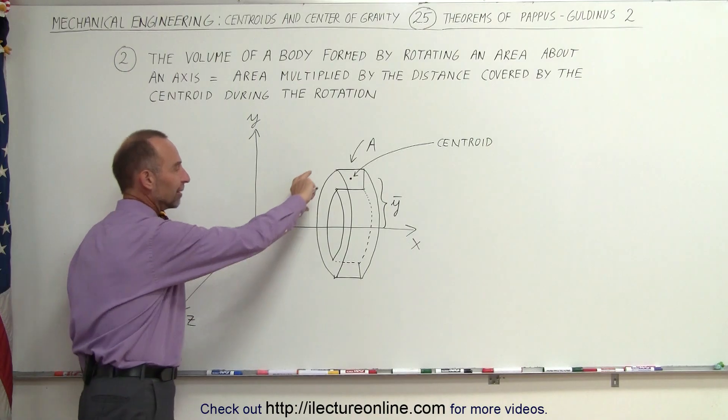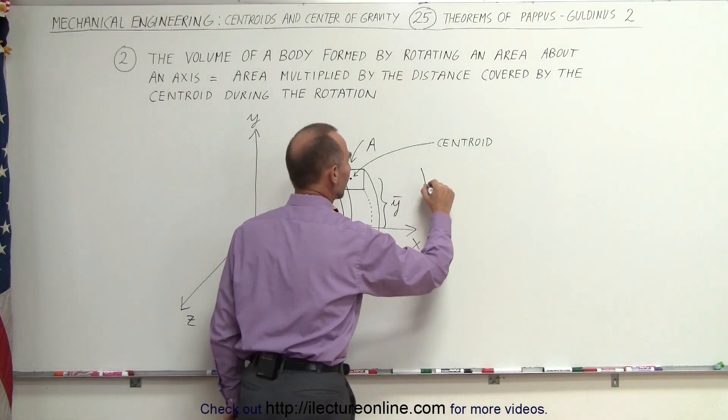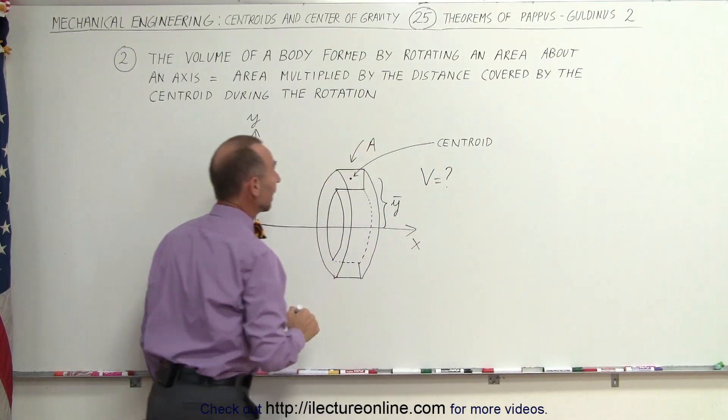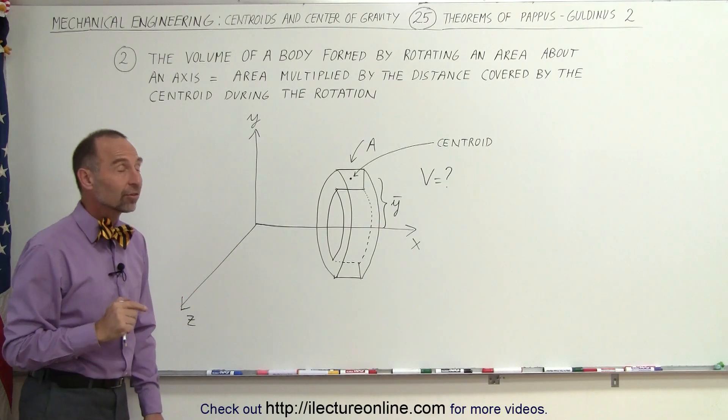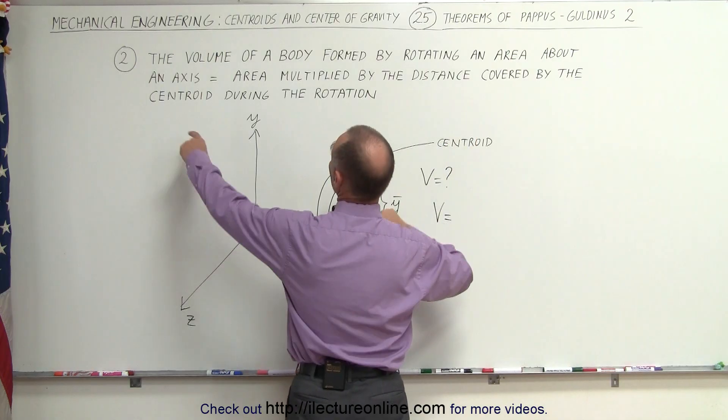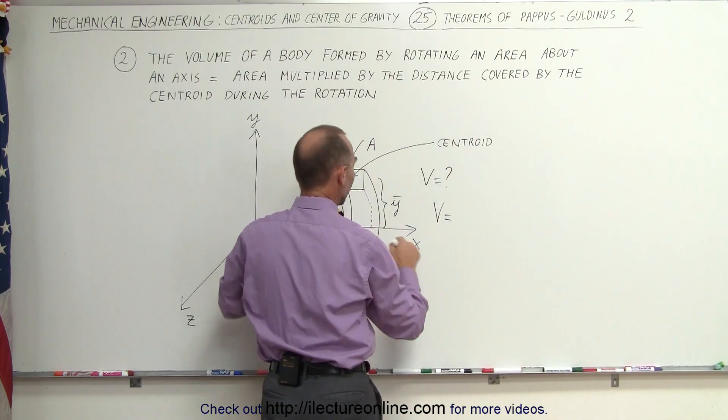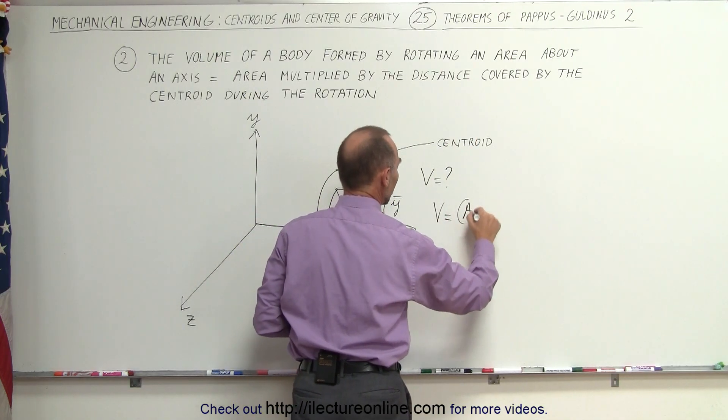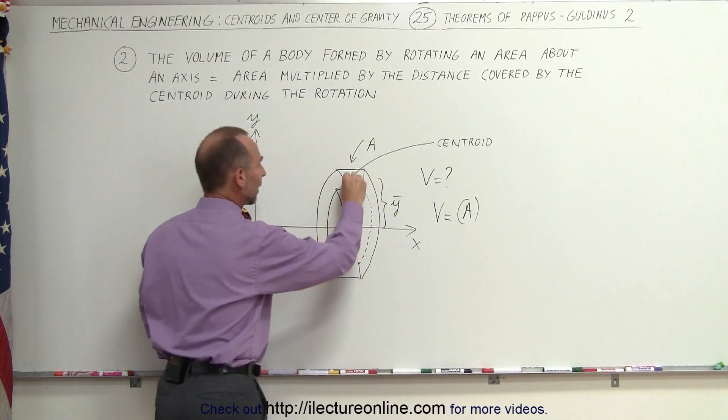Now what we're going to do is we want to find the volume of this. The volume is equal to question mark and according to Pappas-Guldina's theorem it says that the volume is equal to the area multiplied. So we're going to take the area and we multiply that times the distance covered by the centroid.